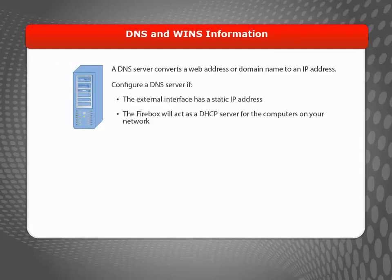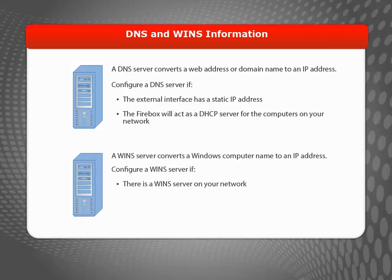In addition, you'll need to find out how your device gets DNS and WINS information. A DNS server converts a web address or domain name to an IP address. You could have your own DNS server, or you could use a DNS server hosted by your ISP. You'll also need a DNS server IP address if your external interface will use a static IP address, or if you want your Firebox to be a DHCP server for the computers on your network. If you're going to use a dynamic IP address on the external interface, you don't need to enter a DNS server address in the Wizard. If you use a WINS server, it will always be installed on a computer on your network — you may need it if you use an older version of Microsoft Windows.